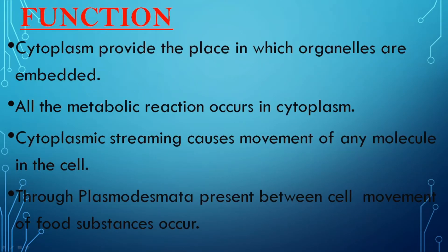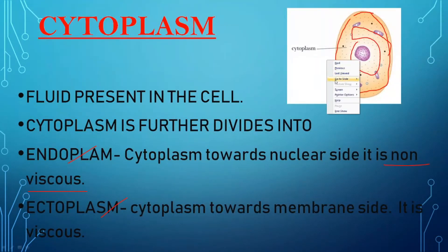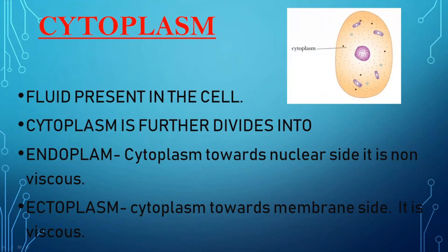Now, what are the functions of cytoplasm? Basically, the function of cytoplasm is it provides the place in which all the organelles are embedded. As you can see in the diagram, all the organelles — whether mitochondria, endoplasmic reticulum, Golgi — all organelles found in eukaryotic cells are embedded in the cytoplasm. Cytoplasm gives them the space to be held in place.